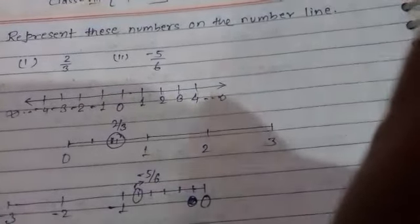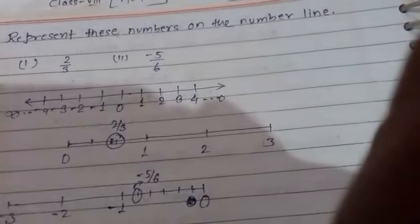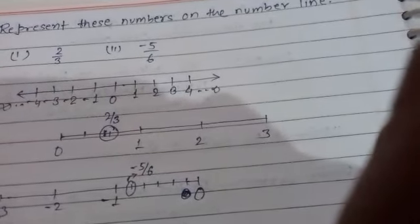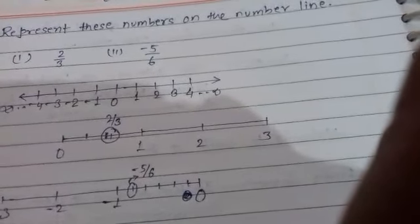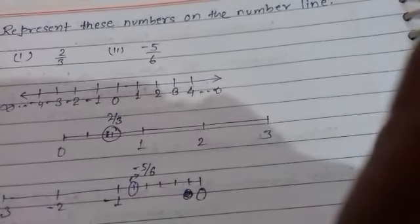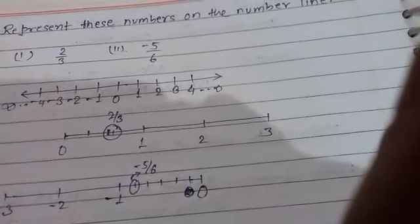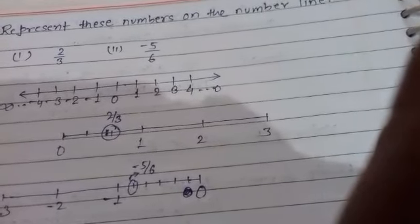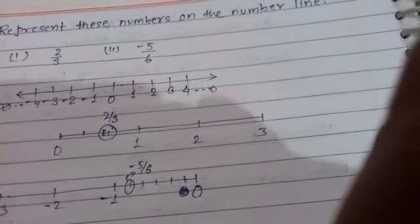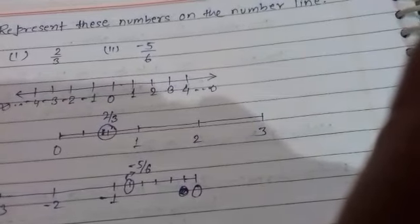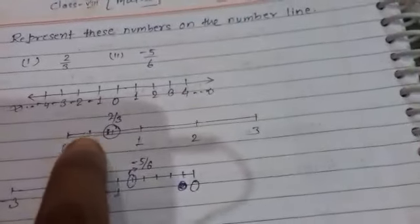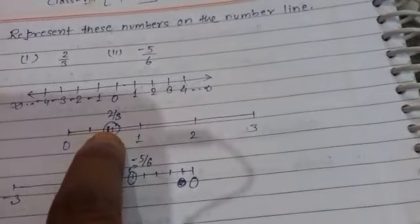Now when we know that 2/3 lies between 0 and 1, we divide 0 and 1 into 3 equal parts. For doing so, I have made 2 equal cuts between 0 and 1, so naturally 3 parts will be divided. You can see that here one part, second part, and third part.